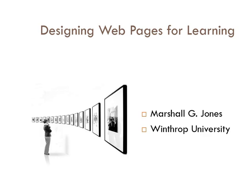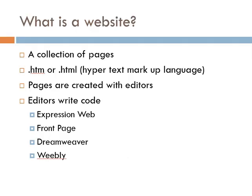I probably should have entitled this 'designing websites for learning' because then this next slide would make more sense. I don't want to insult your intelligence, but let's talk for a moment about what a website is. A website is a collection of web pages and they're written in a language called Hypertext Markup Language, or HTML. You may see at the end of web pages the extension .htm or .html, which indicates the type of document it is — much like a Microsoft Word document would end in .doc or .docx, a web page ends with a particular extension as well.